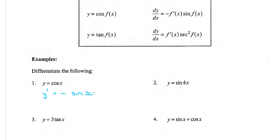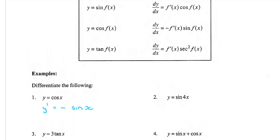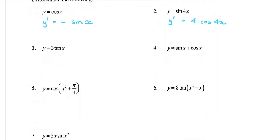Now differentiate sine of 4x. Here 4x is my function. Differentiating sine: the derivative of my function comes out front, which is 4, then sine changes to cos of 4x. So y' equals 4 cos of 4x. Remember: the function itself — cos changes to sine, sine changes to cos — but 4x here stays 4x there. The derivative comes out front, then you just have to check the minus signs.